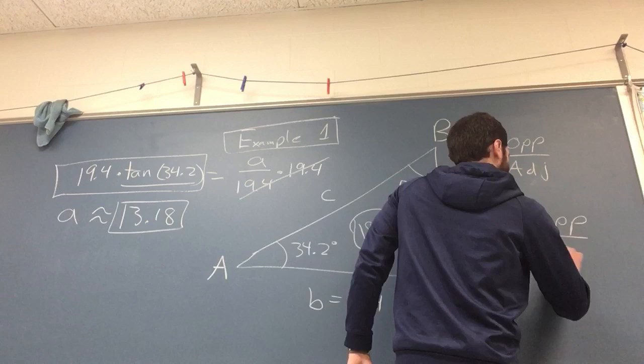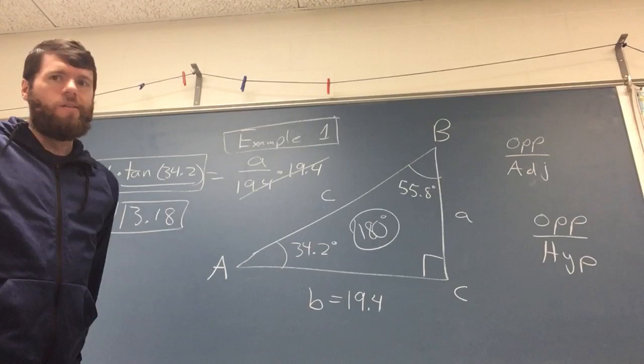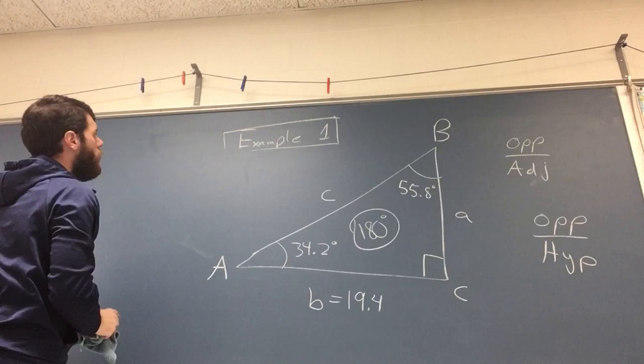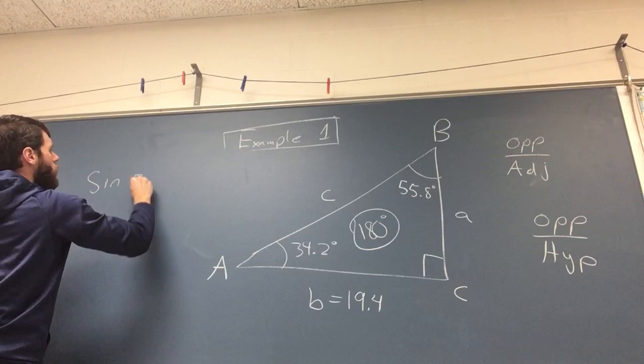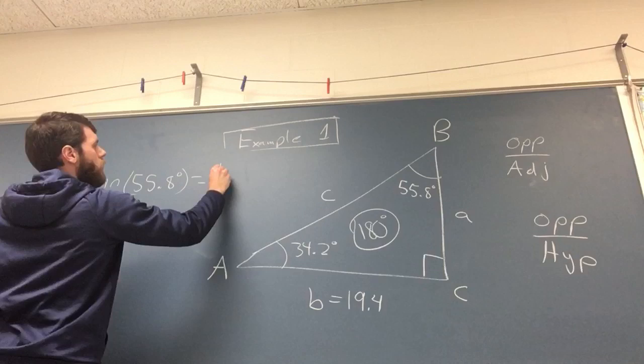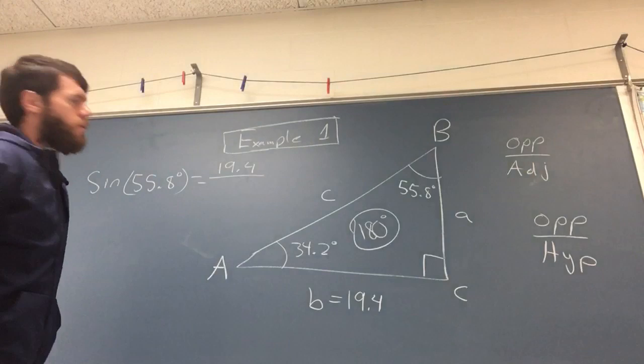That corresponds to the trig function sine. So I'm not in room, so I'll just erase this and rewrite it. The trig function is we have sine of 55.8, sine of B, that will be equal to the opposite relative to the 55.8, so 19.4, over the hypotenuse C.